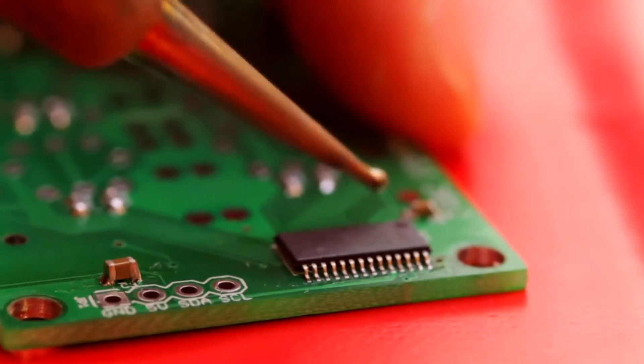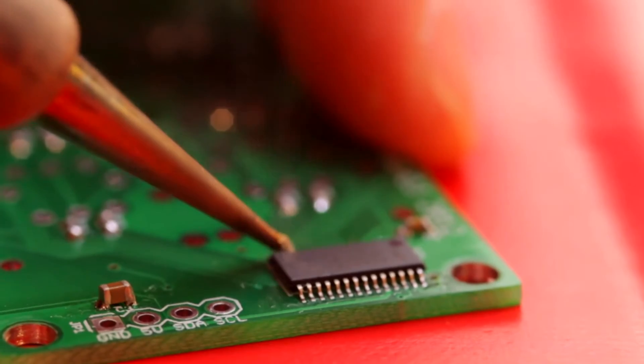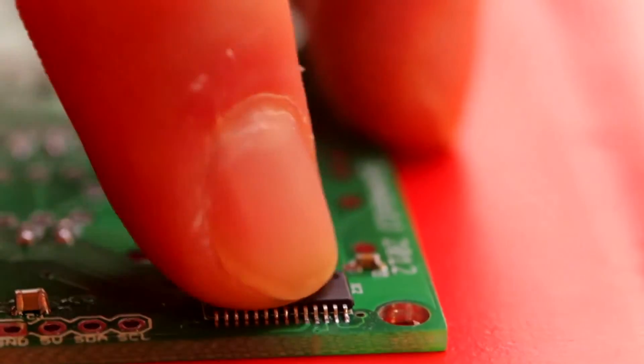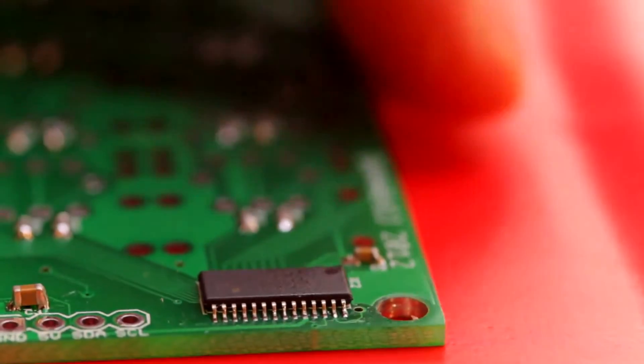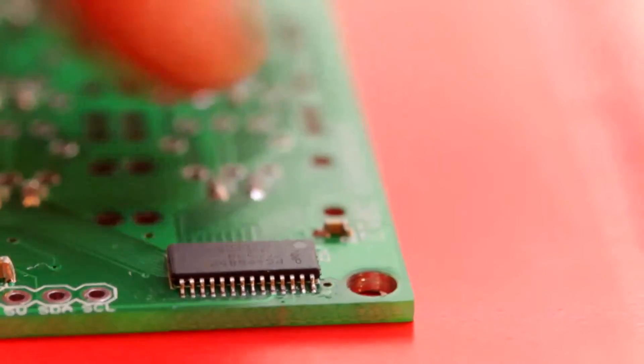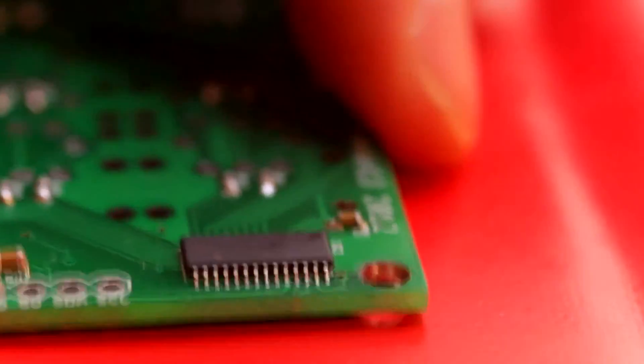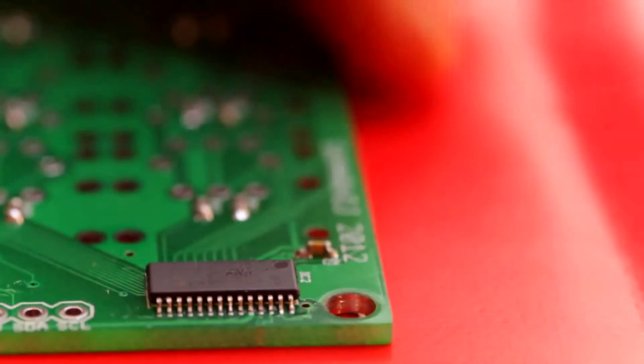When you see closely, you can see if it is soldered well or not. You have to be careful about not making any bridges. Basically, you just drag the soldering iron across the legs and this should fix the whole process.